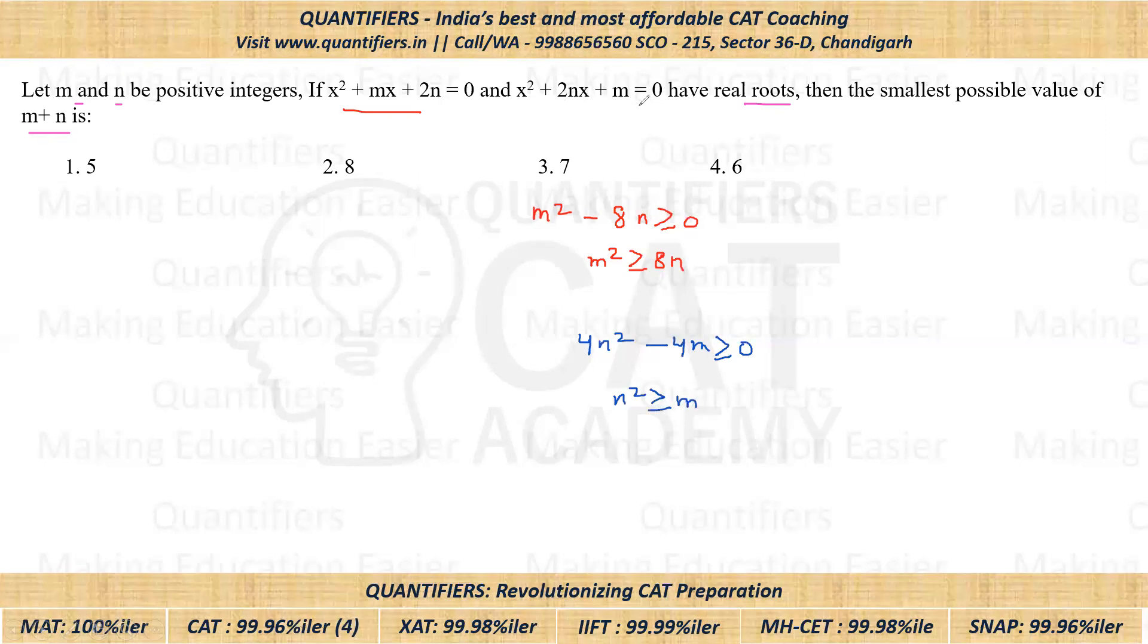So these are the two relations which we have. Now students, we need to find minimum sum of M plus N. So obviously students will try to put minimum values. Now let's start with this first equation.